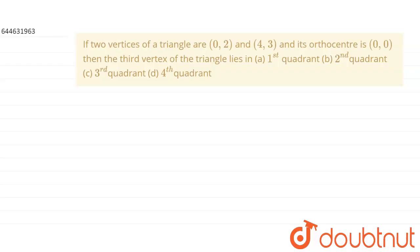Hello students. The question given here is: if two vertices of a triangle are (0,2) and (4,3) and its orthocentre is (0,0), then the third vertex of the triangle lies in — option A: first quadrant, option B: second quadrant, option C: third quadrant, option D: fourth quadrant.